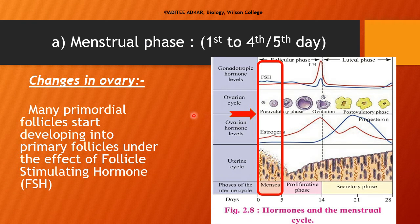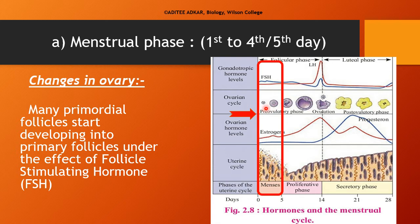At the same time in the ovary, many primordial follicles start developing into primary follicles under the effect of FSH, the follicle-stimulating hormone secreted by the anterior lobe of the pituitary gland. In the graphical representation, the menstrual phase from day 1 to day 4 or 5 shows decreasing endometrial thickness as the endometrium breaks down, low levels of estrogen and progesterone, and the development of follicles progressing from primordial to primary to secondary follicle stage under the effect of FSH.